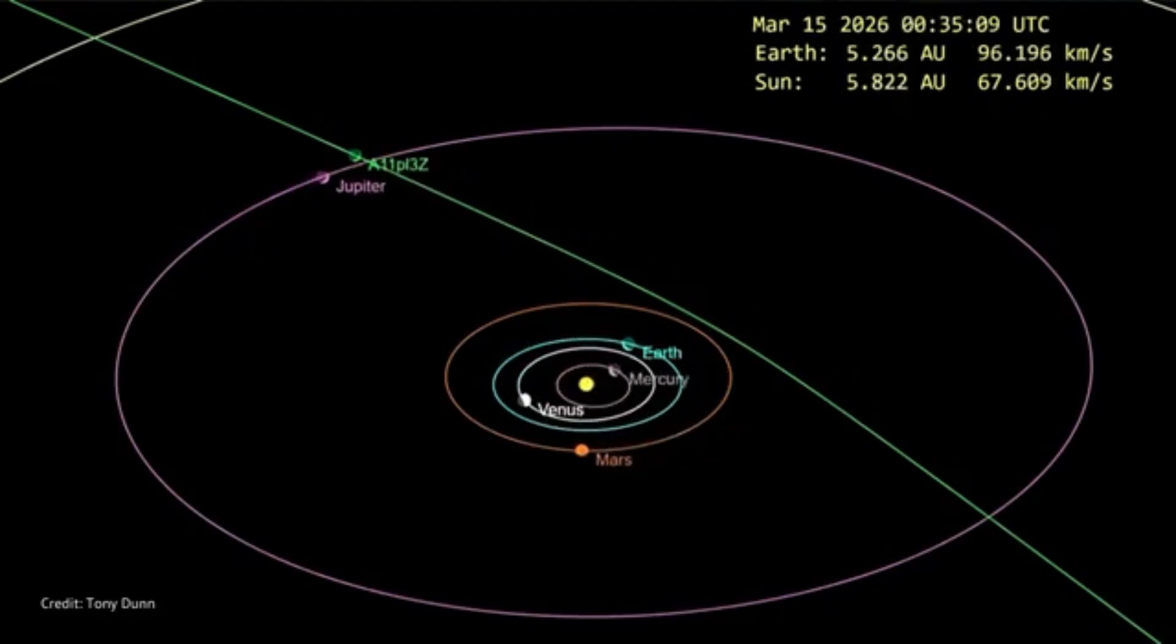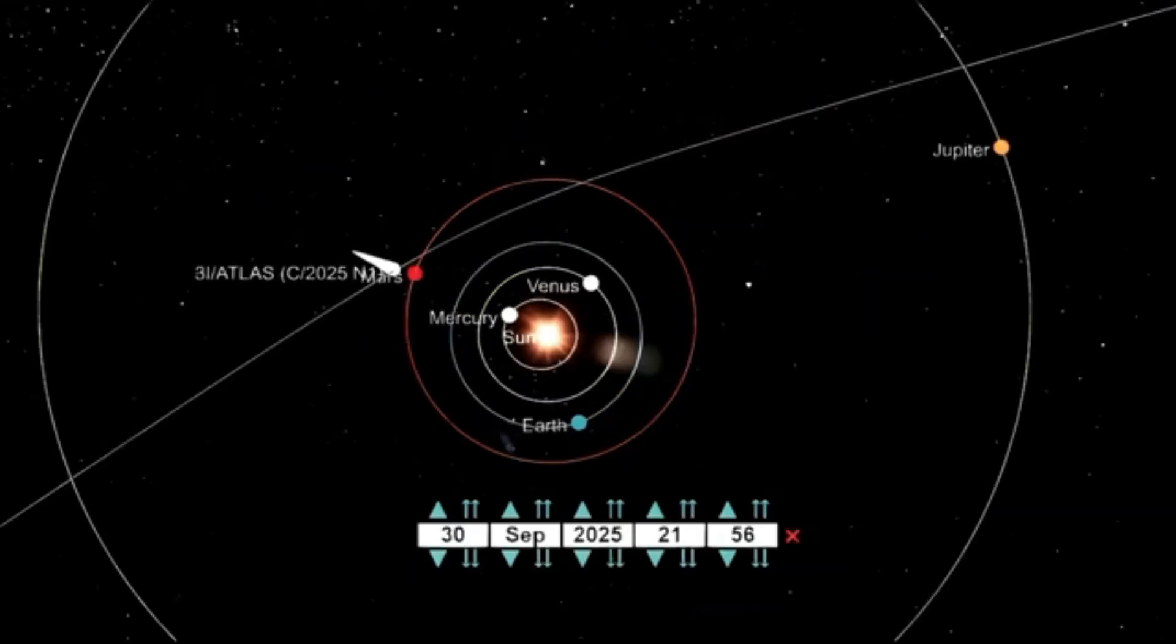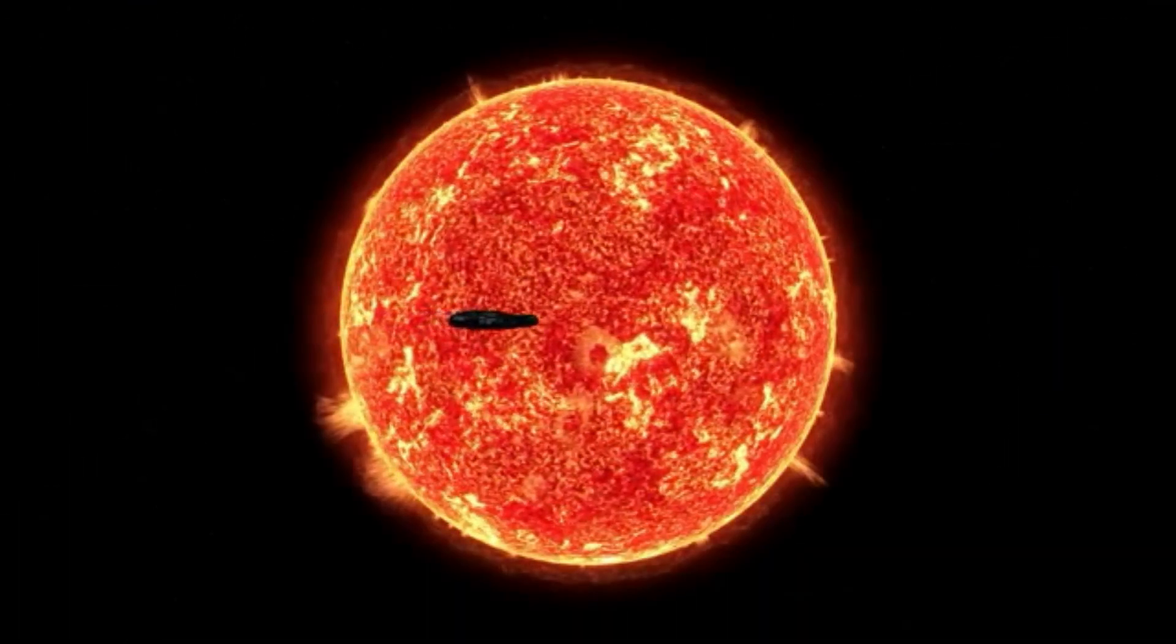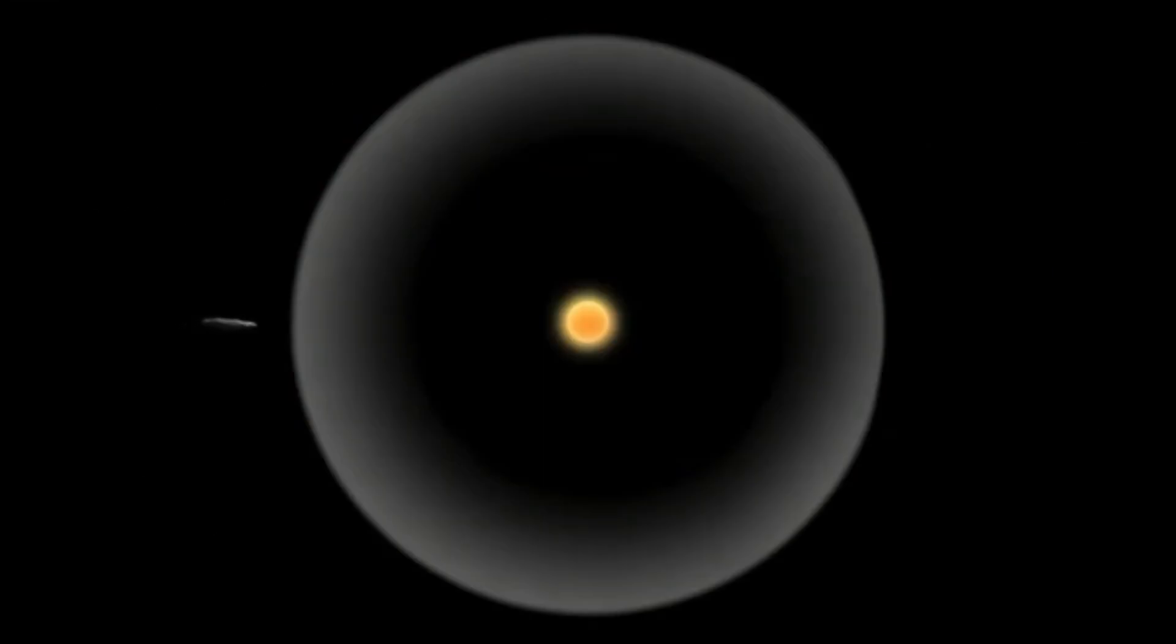Of course, not everyone believes it's just a comet. Avi Loeb, Harvard astrophysicist and well-known interstellar provocateur, has proposed something radical. What if 3I Atlas is a probe, a piece of alien technology? His reasoning is as follows: its large size could easily conceal instruments; its trajectory is unusually efficient and precise; it reaches perihelion behind the sun, shielded from Earth's observation; it skirts dangerously close to Mars, Venus, and Jupiter. These are not just random facts. They hint at the possibility of intent.